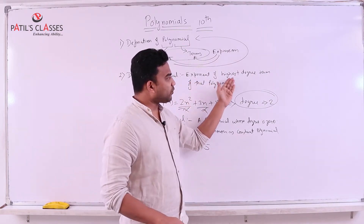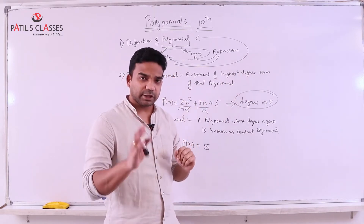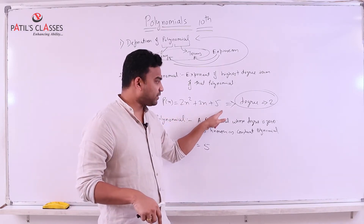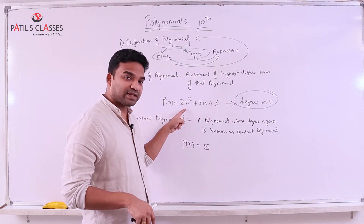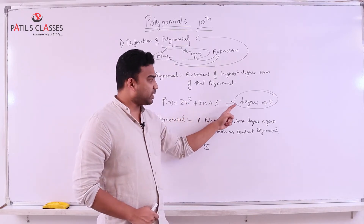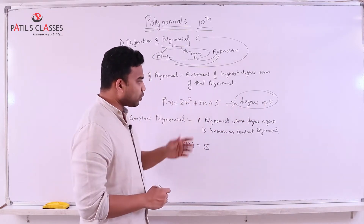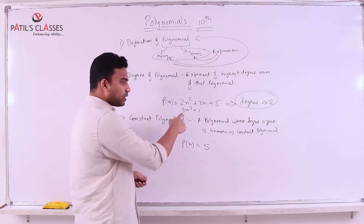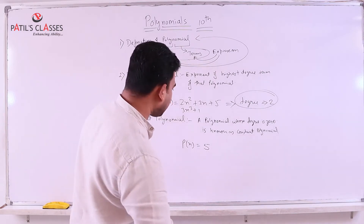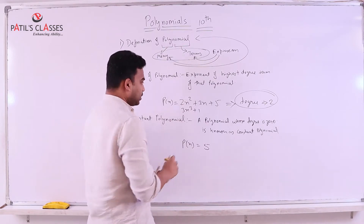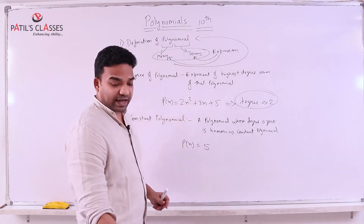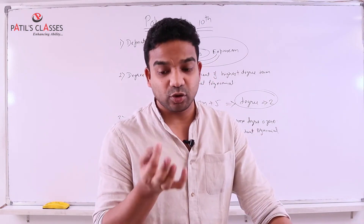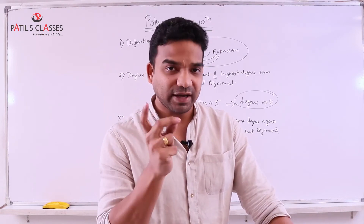The degree of a polynomial is the exponent of the highest degree term of that polynomial. For example, in 2x² + 3x + 5, the highest degree term is 2x², so the degree is 2. Another example: 3x³ + 1 has degree 3, because the highest power term is 3x³. The degree of the polynomial decides its roots, solutions, and factors.